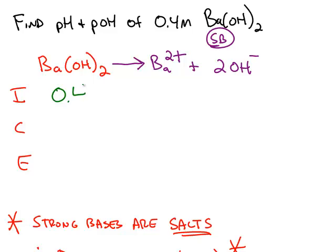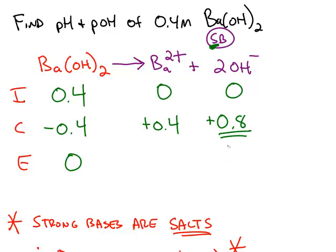The initial concentration of the barium hydroxide is 0.4. The cation and the anion are both zero. We never have any X's in the ICE chart if it's a strong acid or a strong base. 100% reaction means all the barium hydroxide goes away. The barium is going to increase by 0.4, and the hydroxide is going to increase by 0.8 because of that coefficient of 2. Every time one barium hydroxide reacts, we make two hydroxides.